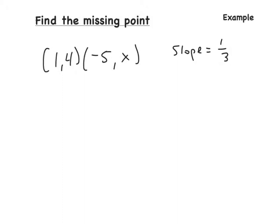Now we have to find a missing point. We are given two coordinates with one number missing, and we are given the slope. Remember, the formula is y2 minus y1 over x2 minus x1 equals the slope, also written as m. Slope and m are exactly the same.